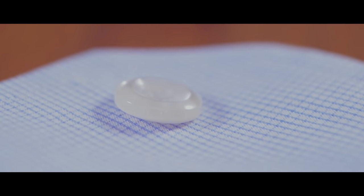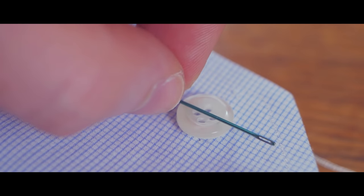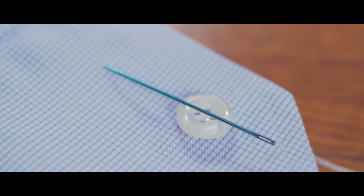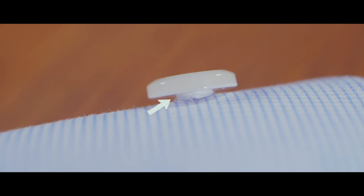We are now going to use the X as a guide for sewing the button. Place the button on top of the X, then take your second needle and place it on top of the button. The second needle will help us to form the shank, which is a bit of thread under the button that will make it more secure and easier to fasten.